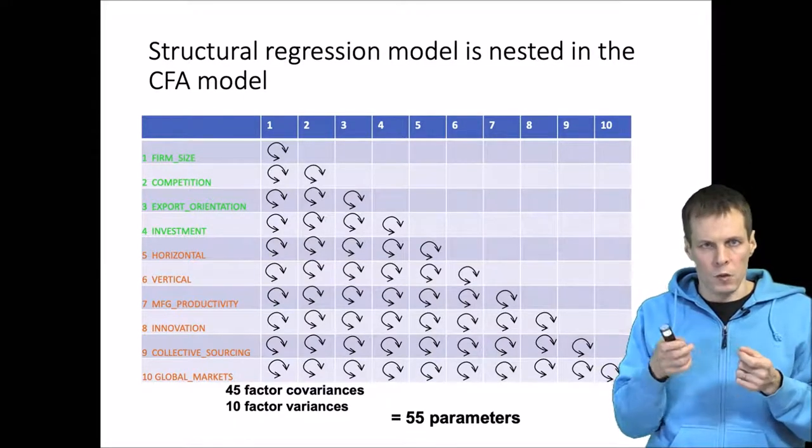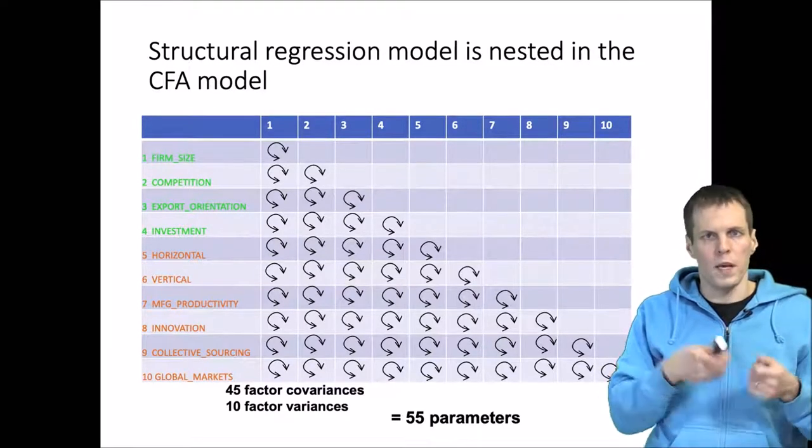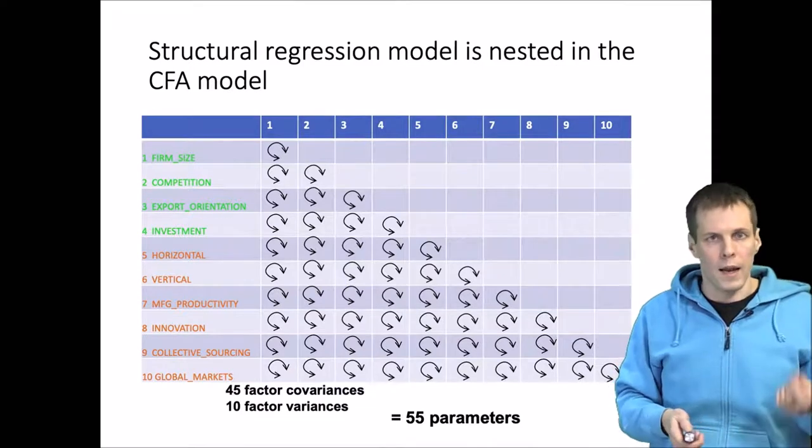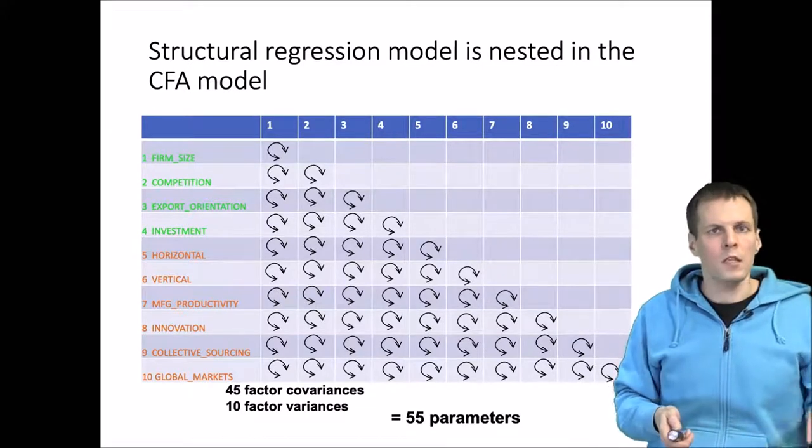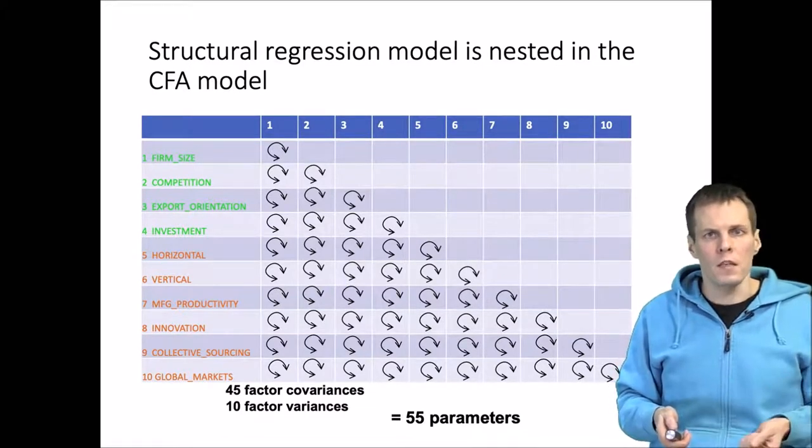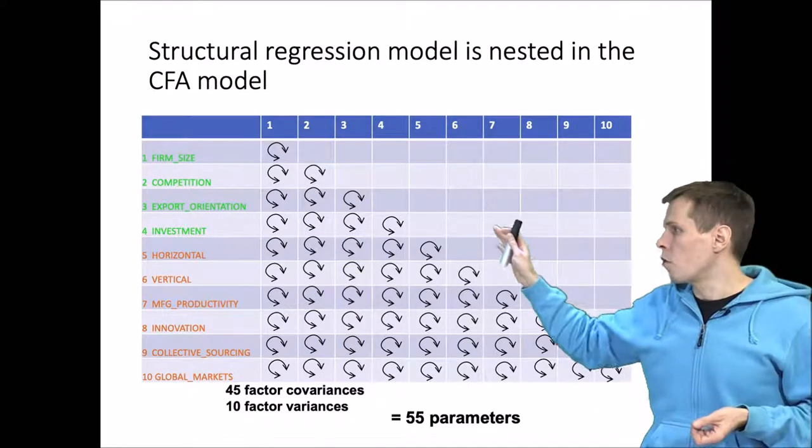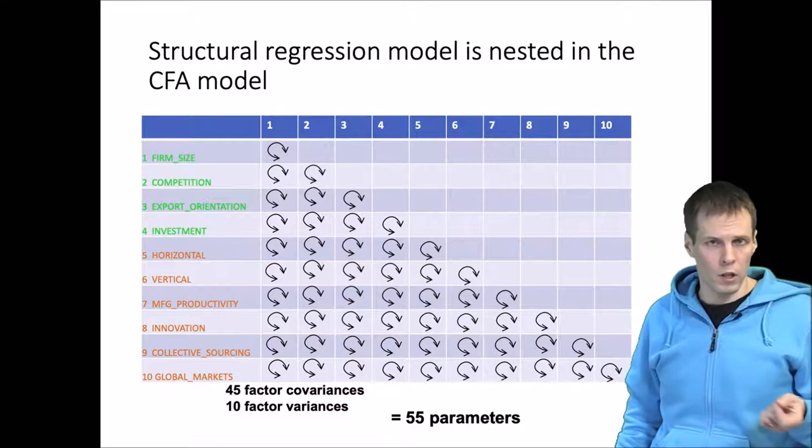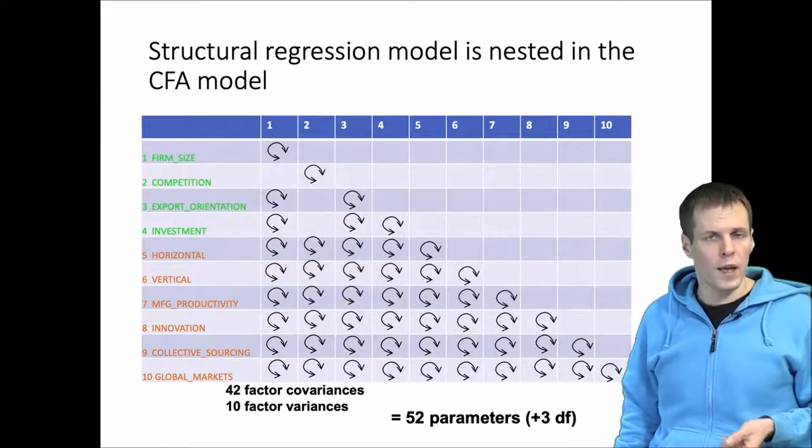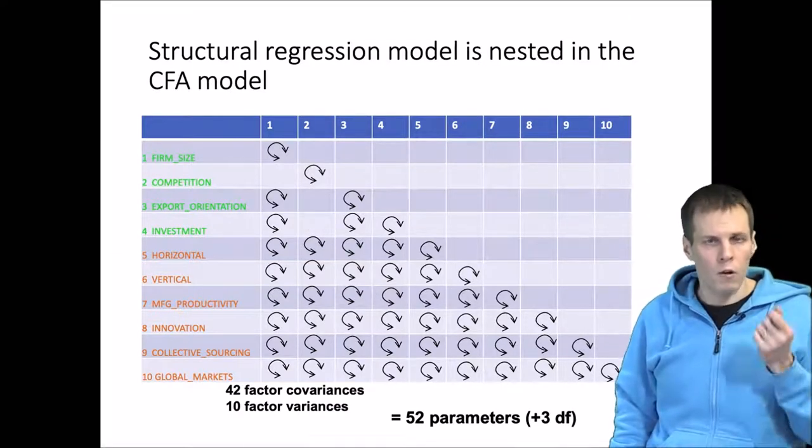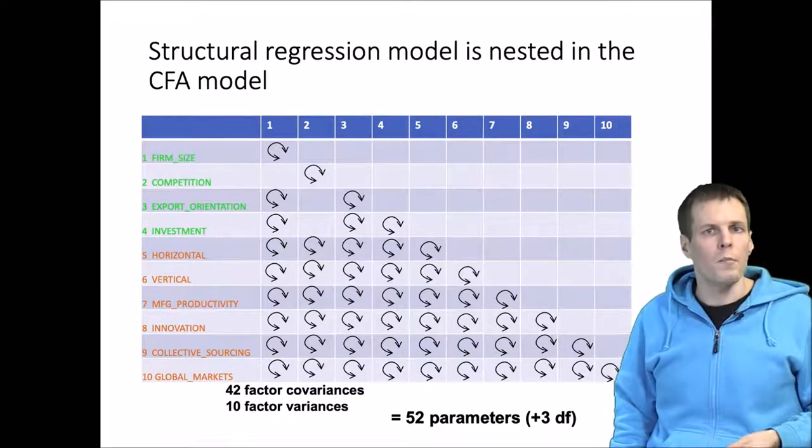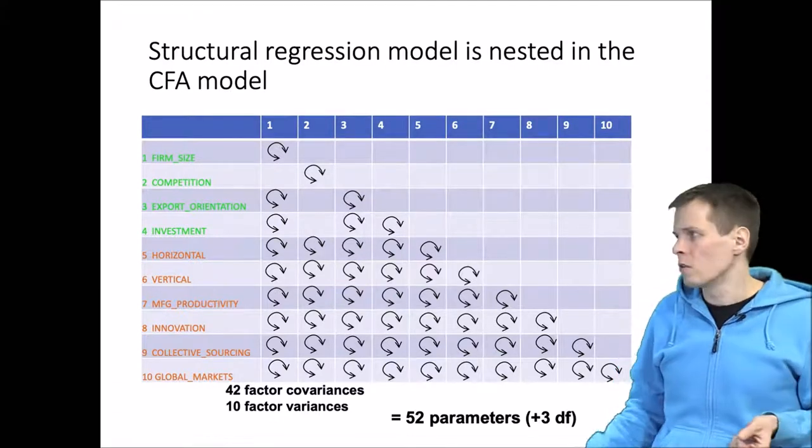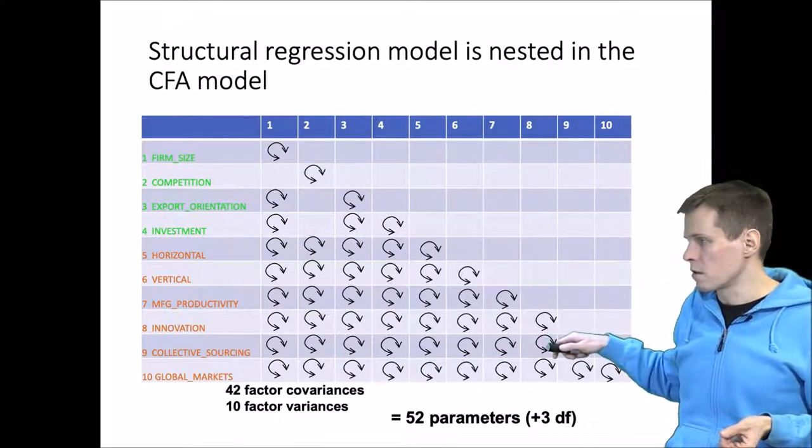This number will decrease as we take these factors away from the exogenous variables, make them endogenous by adding regression paths. Let's first add the constraints that they have for the competition, that it needs to be uncorrelated with all the other control variables. We add three constraints. Three correlations are not estimated but are constrained to be zero. That gives us three degrees of freedom more.